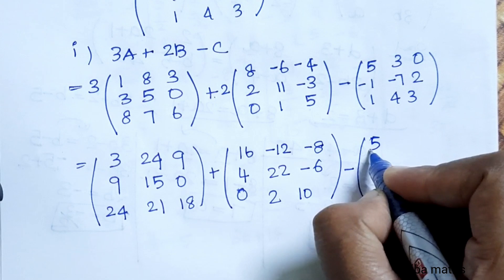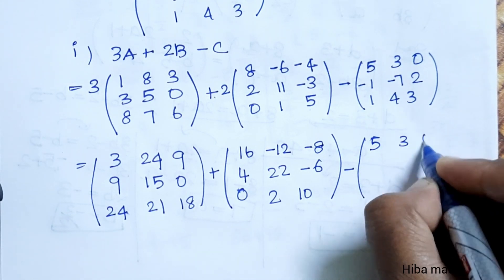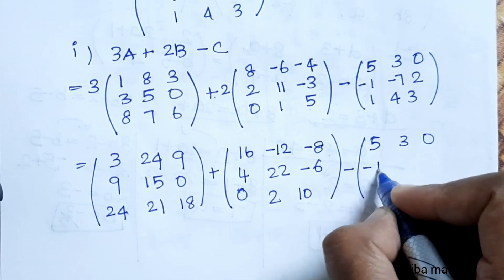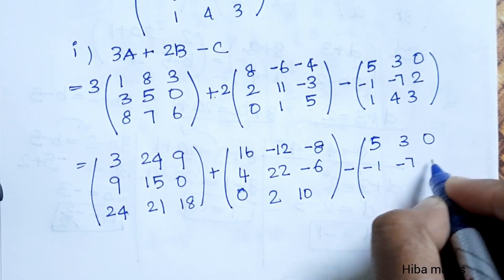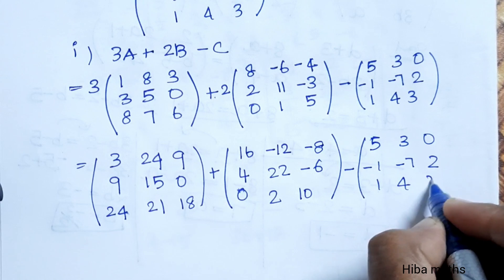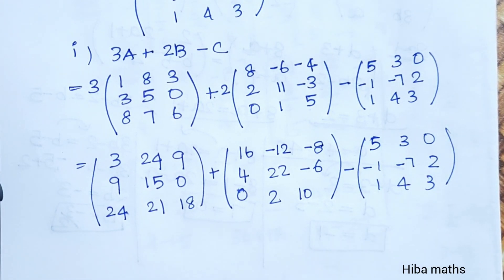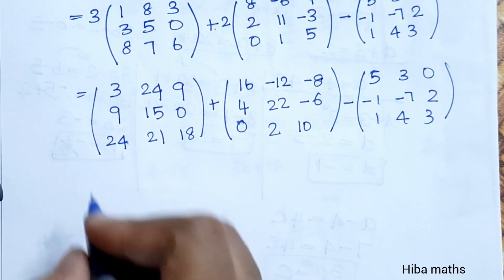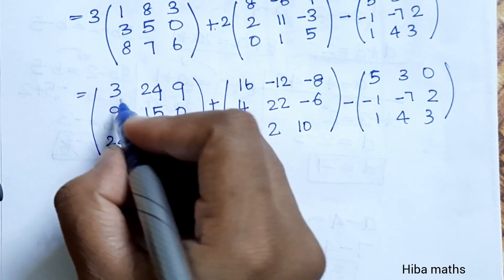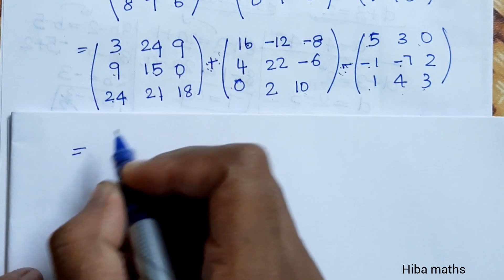Now we change sign to subtract C matrix: 5 3 0, -1 -7, 2 1 4 3. This is the 3A matrix, this is the 2B matrix, and this is the C matrix we are subtracting.